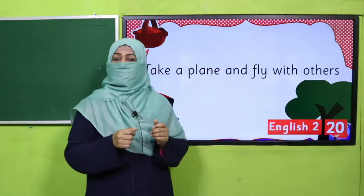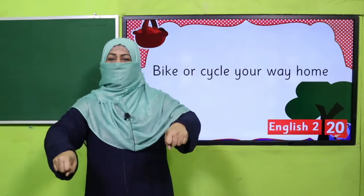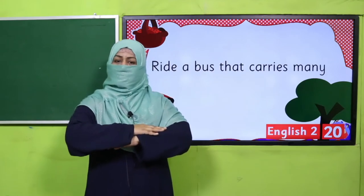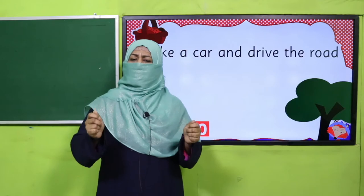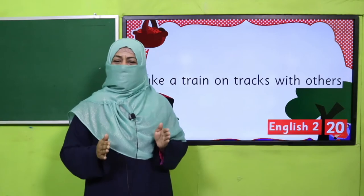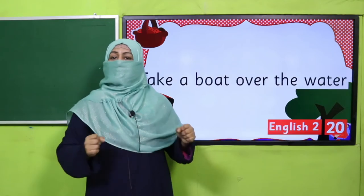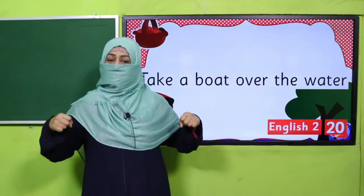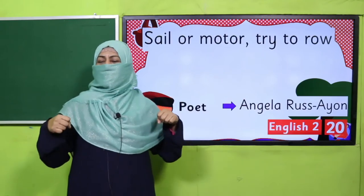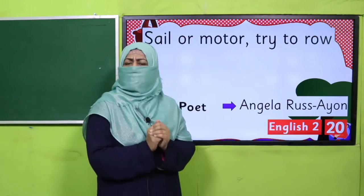Different ways to get there. Take a plane and fly with others. Bike or cycle your way home. Ride a bus that carries many. Take a car and drive the road. Take a train on tracks with others. Ride a horse and travel slow. Take a boat over the water — sail or motor, try to row. That's a very interesting poem! Now it's your turn — pause the video, enjoy reciting this poem with actions, then come back.